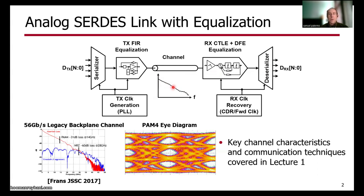How we compensate for that is typically with equalization, starting at the transmit side with some type of FIR or feedforward equalization, and then at the receiver side, continuous-time linear equalization and decision feedback equalization.